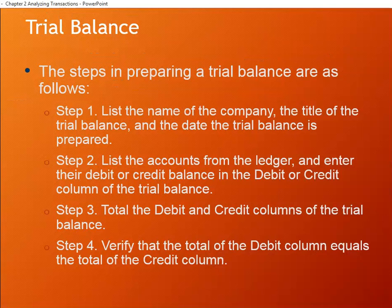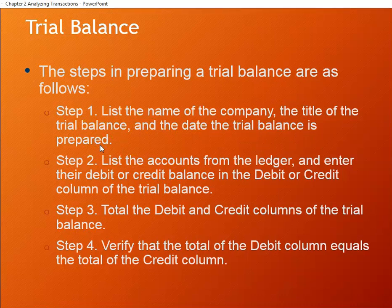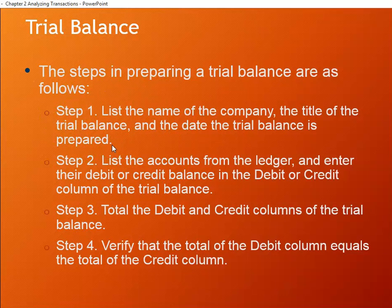Let's review some steps and then look at things we need to be on the lookout for. Step one: list the name of the company, the title of the trial balance, and the date it is prepared. In reality, you would run a report in your software, put in the dates, and be in the correct company file — so this happens automatically. You won't be doing this on paper.